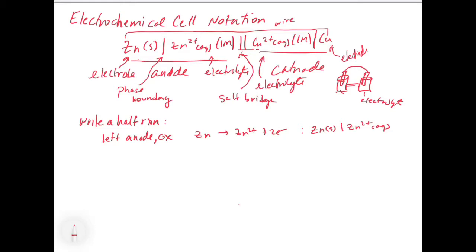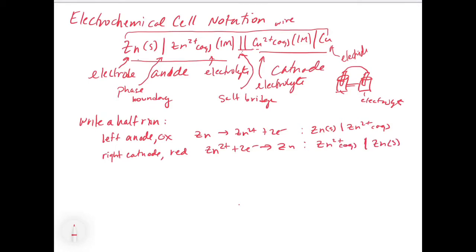If we had it the other way around — zinc two plus plus two electrons goes to zinc — we would write zinc two plus aqueous first, then the zinc solid on the other side, denoting that it was the cathode.